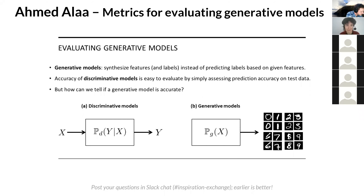Generative models work in a very different way than our usual discriminative predictive models, in the sense that they don't really make predictions — they create new data. They synthesize features or labels based on a training sample. While it's very easy to evaluate the performance of discriminative models simply by testing them on a held-out testing sample and evaluating their predictions, the same doesn't apply for generative models. We cannot straightforwardly say whether the brand new data generated by a generative model is good or bad.